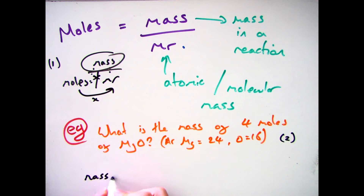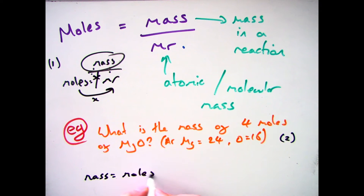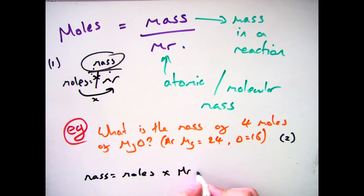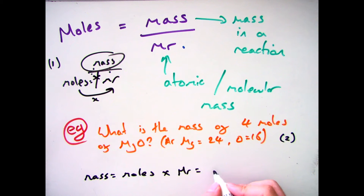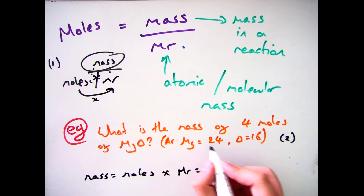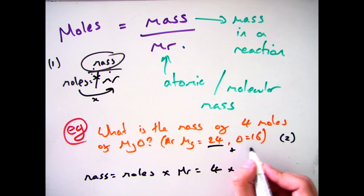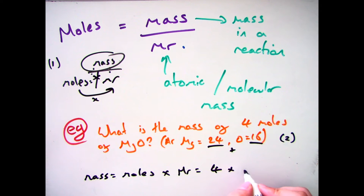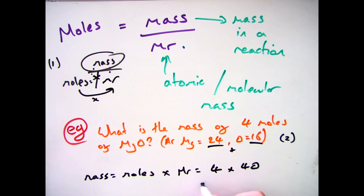So I have my number of moles which is 4, and my MgO: 1 times 24 and 1 times 16. Add those together to get 40, so 4 times 40 gives me a mass of 160 grams.